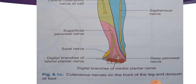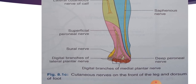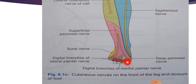The deep peroneal nerve terminates by supplying the skin adjoining the cleft between the first and the second toes. Next, the digital branches of the medial and lateral plantar nerves curve upwards and supply the distal parts of the dorsum of the toes including the nail buds. The digital branches of the medial plantar nerve supply the medial three and a half digits, and the lateral plantar nerve supplies the lateral one and a half digits.